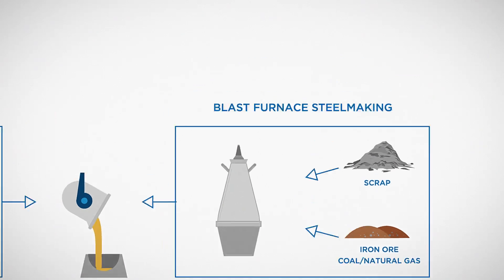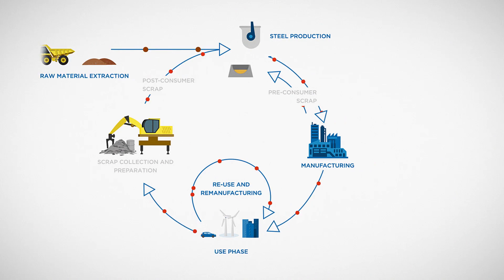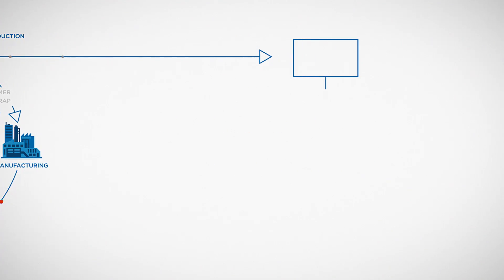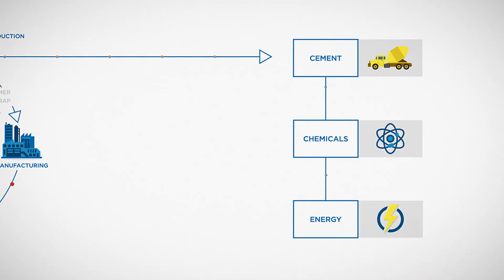Steel production also results in useful by-products. These go on to have lives of their own as fundamental materials in other sectors, such as cement, chemicals and energy generation. This is industrial symbiosis in action.